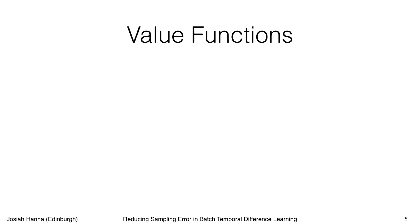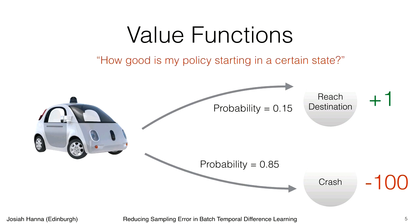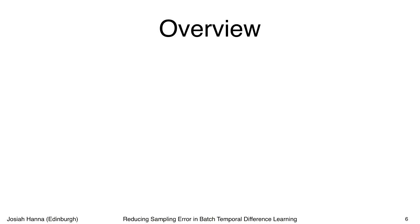To make the idea of a value function more concrete, consider an autonomous driving domain where an agent controlling a car might be in a particular state and have a certain policy defining its control software. That policy might end up in one of two outcomes: reaching its destination or ending up in an accident. We can associate reward values with these outcomes — reaching the destination is a small positive reward, but an accident is a really bad penalty. The value function tells us how good our policy is starting from a certain state. If our policy had only a 15% chance of reaching the destination and an 85% chance of crashing, the value function would tell us our policy isn't very good.